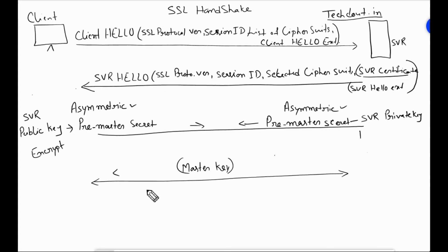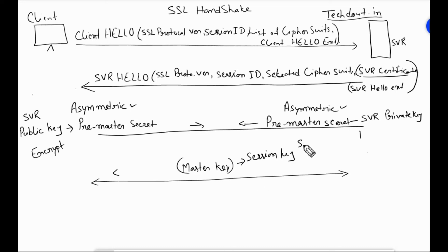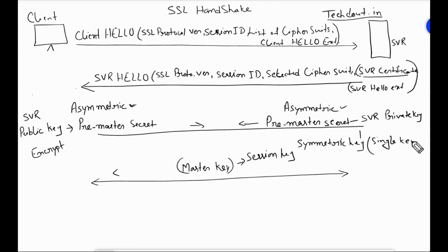Once both sides have successfully created the Pre-Master Secret, they use it to derive a Master Secret. From the Master Secret, they calculate a Session Key. The Session Key is a symmetric key — a single shared key used for both encryption and decryption.